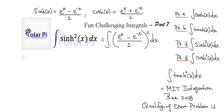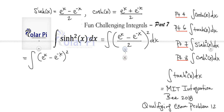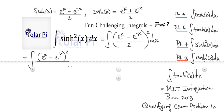Okay, cool. Now we can write that what we have is the same as e to the x minus e to the negative x, all squared, and then divided by four, and then of course dx.